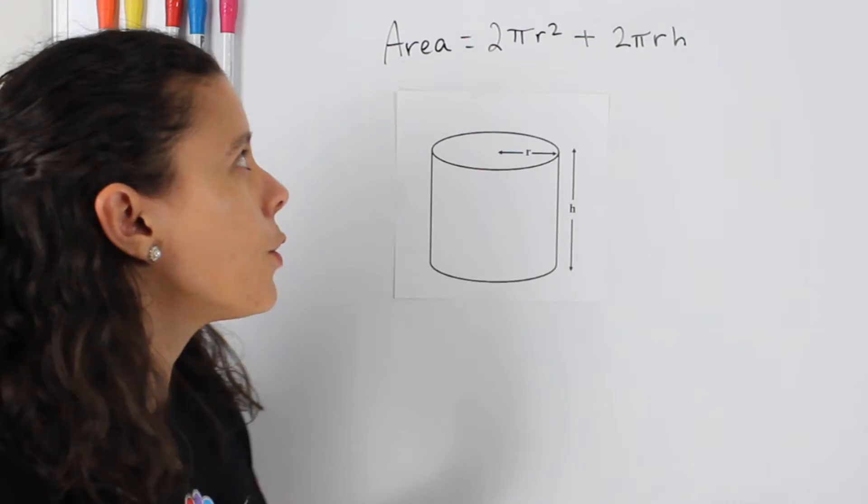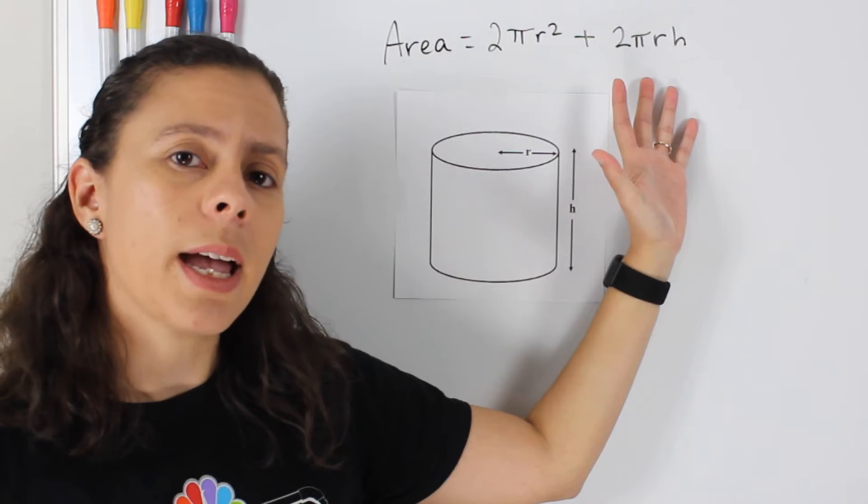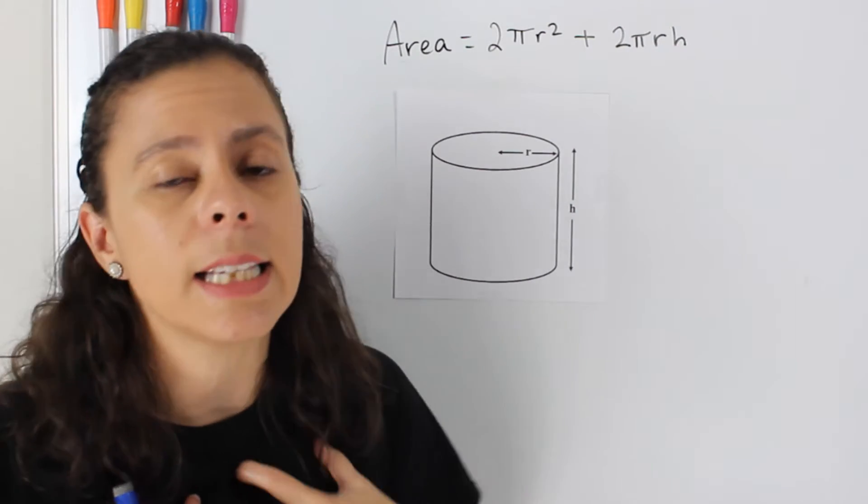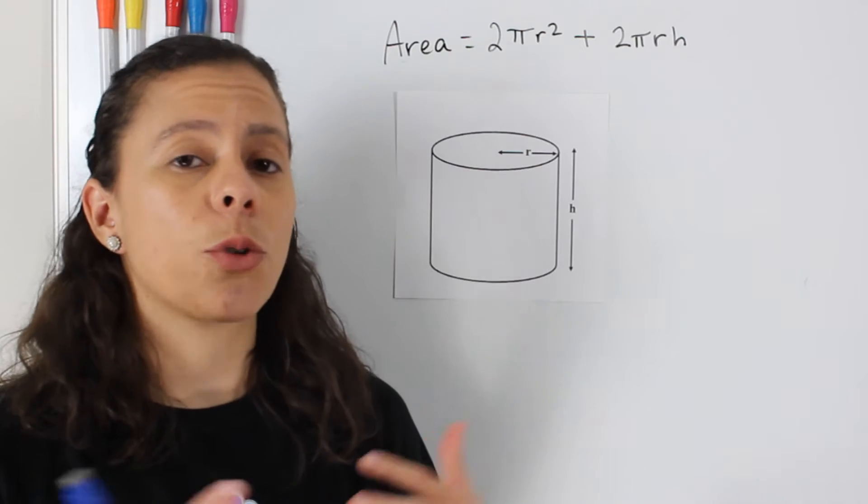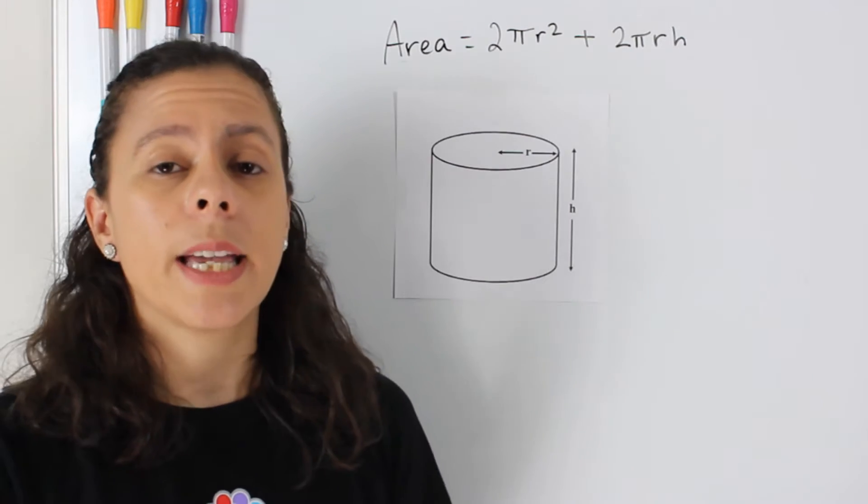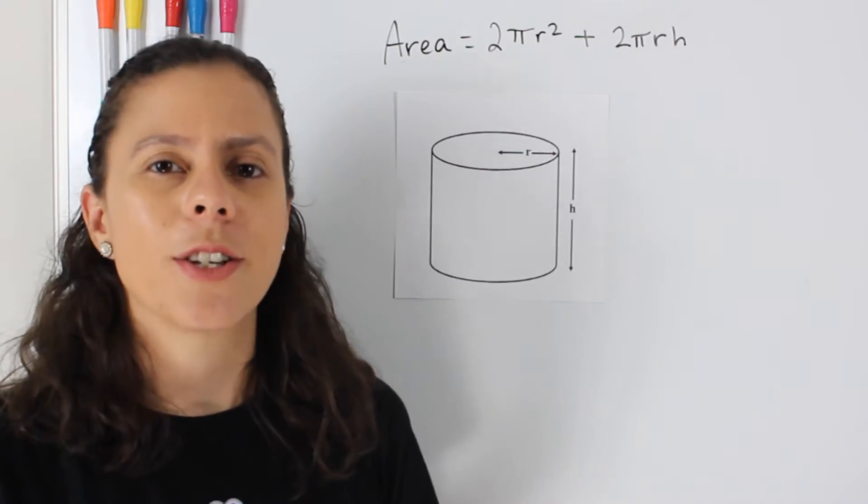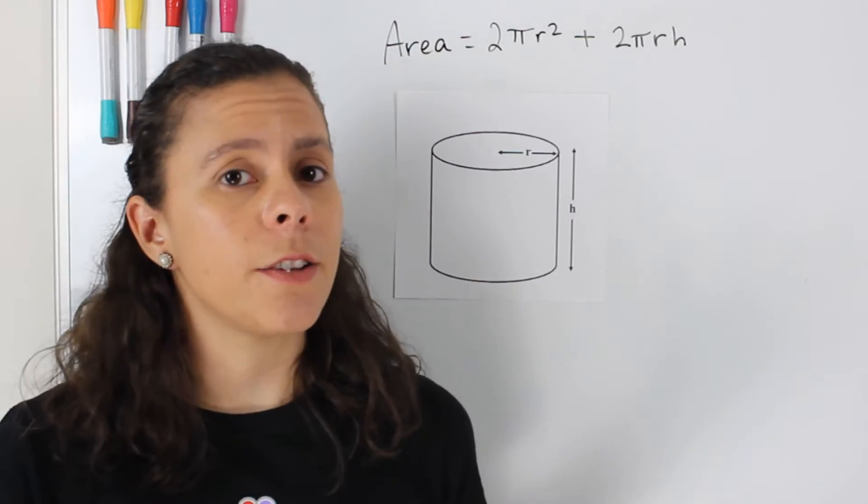Now for the surface area, I wrote the formula this way because I think that that is the way that makes most sense to me at least. If we follow the same trend we've been using so far on breaking apart the figure and finding the surface area of the different sections first, right? So on the cylinder, it's not going to be any different.